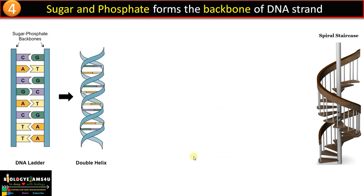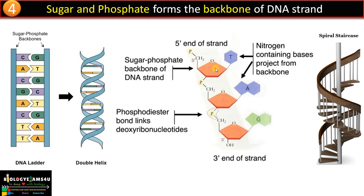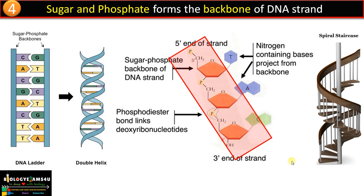Point number five: sugar and phosphate form the backbone of the DNA strand. In this DNA ladder, the backbone is made up of pentose sugar with phosphate attached, joined by phosphodiester linkage. The nitrogenous bases project from the backbone towards the center, forming the stairs of the spiral staircase.